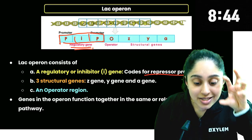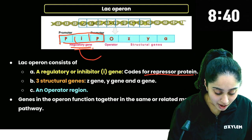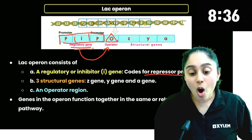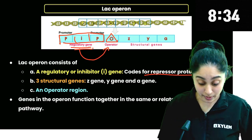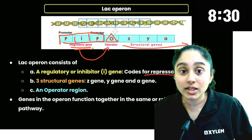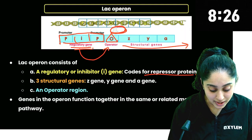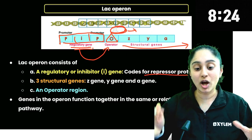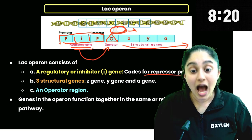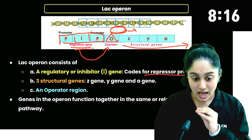What does this repressor protein do? It binds to the operator region. So when the repressor is in the operator, this gene will go to transcription. Because RNA polymerase is in the molecule — if the polymerase is in the molecule, it is not blocked by the repressor molecule. So this structural gene is expressed.